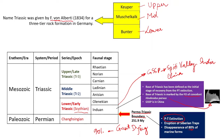Then comes the middle Triassic, which has two stages: the lower Anisian and the upper Ladinian. The late Triassic has Carnian, Norian, and then Rhaetian. This is how the Triassic period is defined — its base is defined on the basis of the first occurrence of Hindeodus parvus, marking the initial stage of recovery after the Permo-Triassic extinction, which is a very important event.